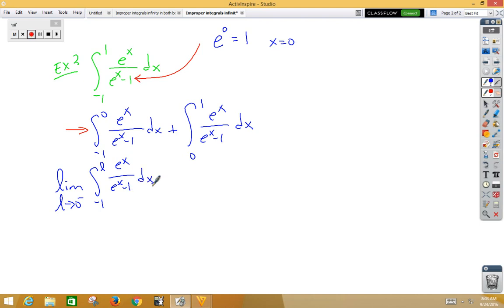Well, let's do that as a u sub. I'm going to bring that over here. We have e to the x over e to the x minus 1 dx. If u is e to the x minus 1, du is e to the x dx. And, of course, we have that. So this becomes 1 over u du, which is a natural log.